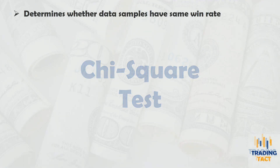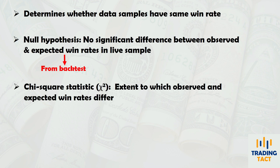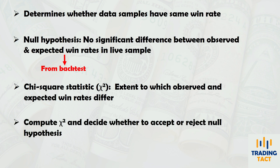This second statistical test — the chi-square test — determines whether your backtest and live results have a similar win rate. The null hypothesis states that there is no significant difference between the observed and expected win rates during live trading. The expected win rate is obtained from your backtest. The extent to which observed and expected win rates differ can be quantified using the chi-square statistic. Unfortunately, Excel does not include this test by default, so some manual work is required.